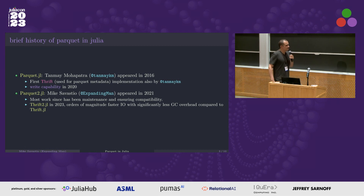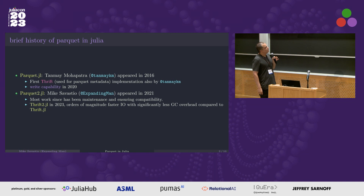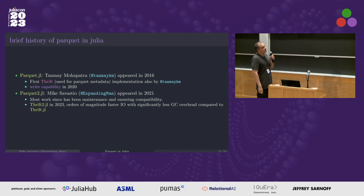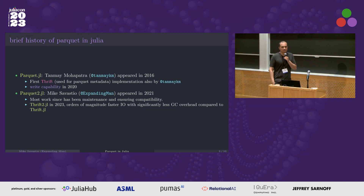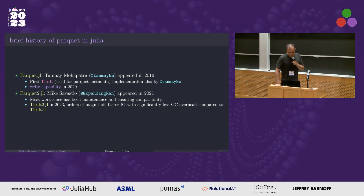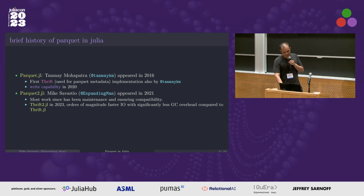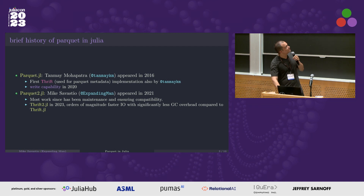A brief overview of how Parquet has been available in Julia. First there was Parquet.jl, which was Tanmay Mahapatra — he did this very early on, back in 2016, so we've had that available thanks to him. That did not get write capability until 2020. In 2021, I did Parquet2. There weren't really any major features in the intervening timeframe, but this year I rewrote Thrift, which is a different serialization format used for the metadata for Parquet — it was a bit of a performance bottleneck, so I redid that this year.